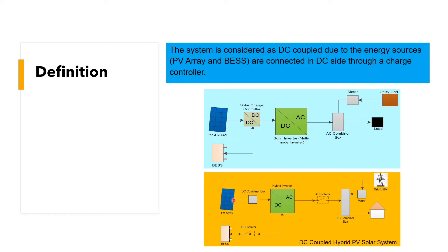We have two types of DC coupled system. The first type is where the solar charge controller is outside of the solar inverter — from the PV array, it supplies to the solar inverter and at the same time to the solar charge controller. The second type is a DC coupled hybrid PV solar system, where the charge controller is inside the hybrid inverter. In a hybrid system, you find an input for the PV array, an input for battery storage, and one output for the AC side.